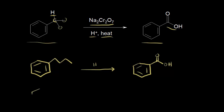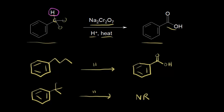What if you try this reaction with tert-butylbenzene? Adding sodium dichromate and sulfuric acid with heat, we would get no reaction. That's because there are no benzylic hydrogens present — the benzylic carbon has three methyl groups attached and no hydrogens, which are necessary for the reaction to occur. So keep these reactions in mind when doing synthesis problems, because they are very useful.